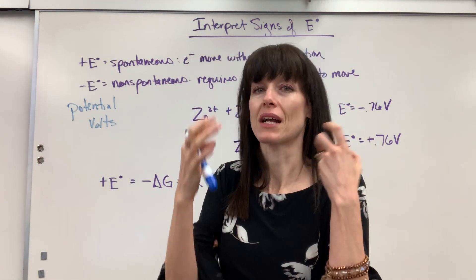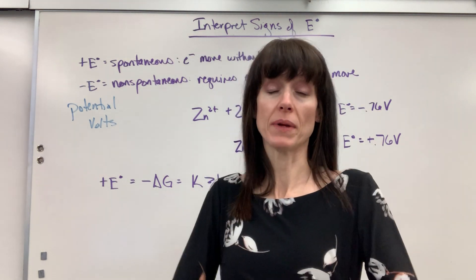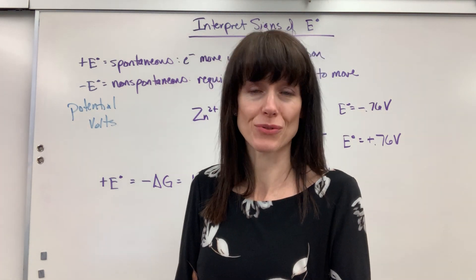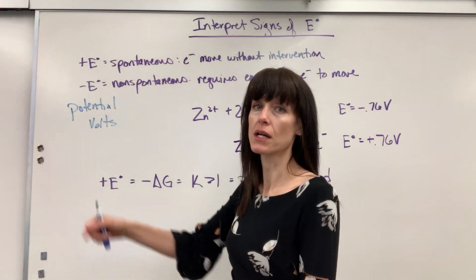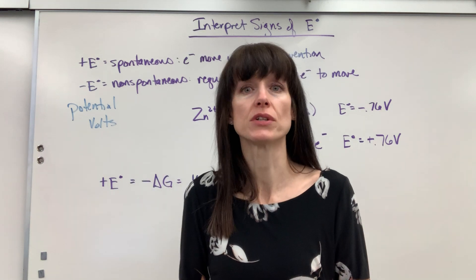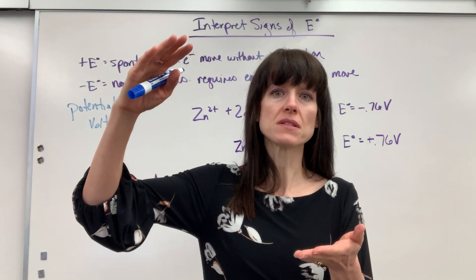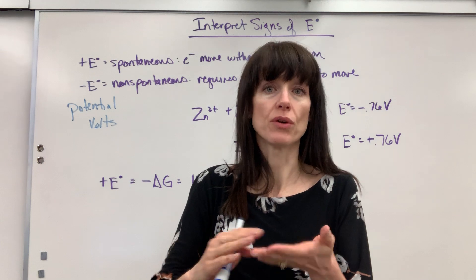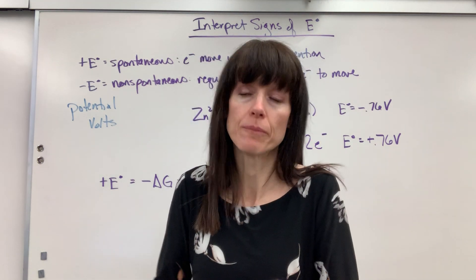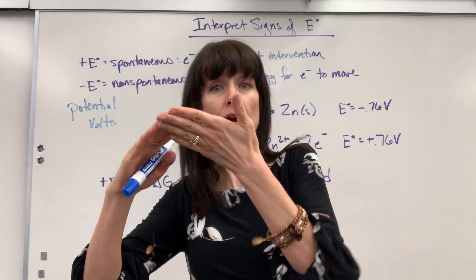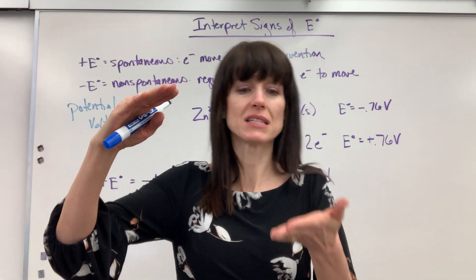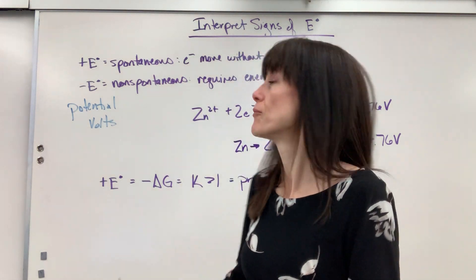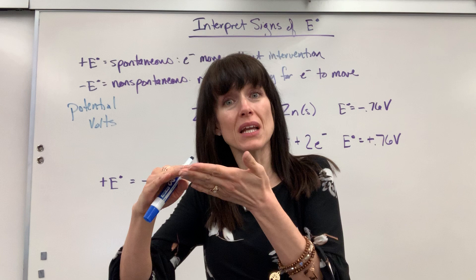That kind of helps contextualize it. I'll be honest — I struggle with physics and electricity because it's so abstract for me. So I have to have this mental picture: voltage is potential, just like the height difference of water running down a mountain. A positive E means the water naturally flows and electrons naturally move. When electrons move, that creates current, which is electricity. But a negative E is backwards — like recharging a battery where I have to put energy in to make the electrons move back up that mountain.